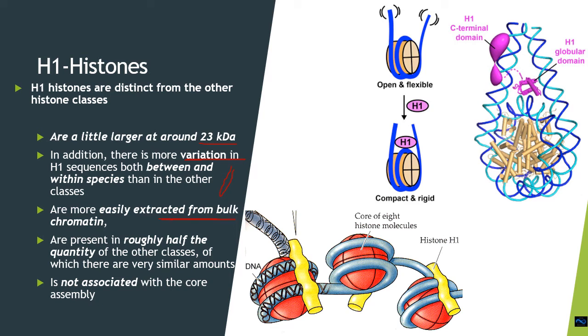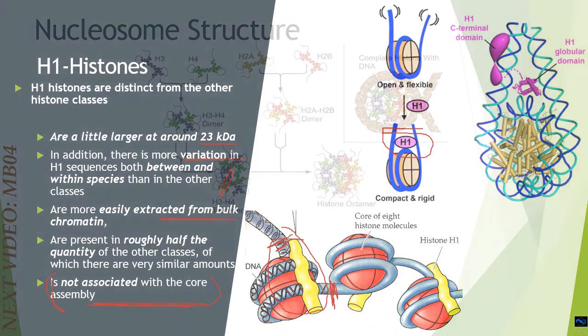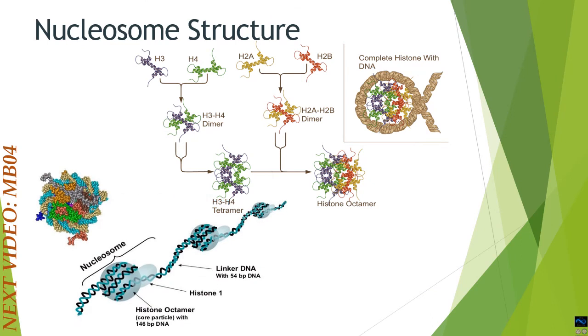Why? Because they don't make a central core structure within the nucleosome or chromatin model. They usually link two DNA fragments in between the two nucleosomes, as you can see in this diagram. They are usually present in half the quantity compared to the other histones, and as I already mentioned, they are not associated with the core assembly within the nucleosome model.